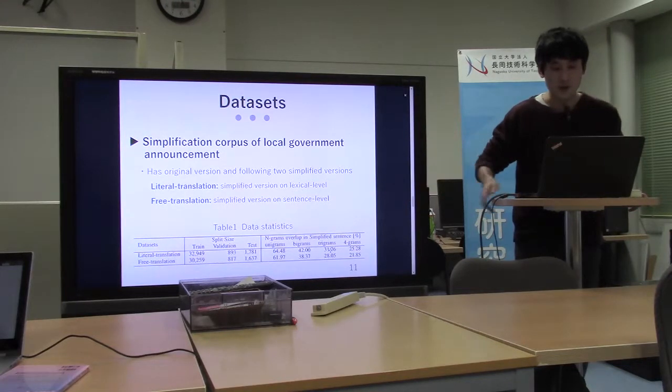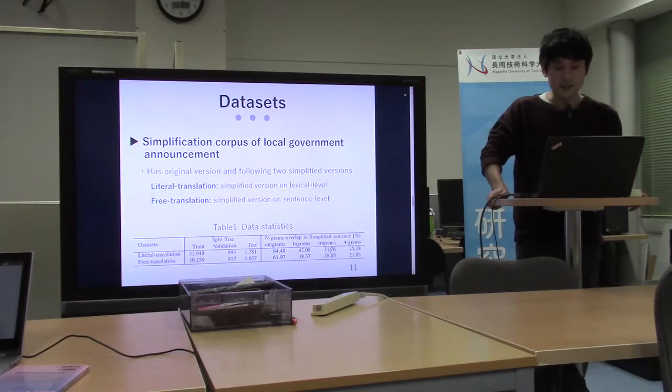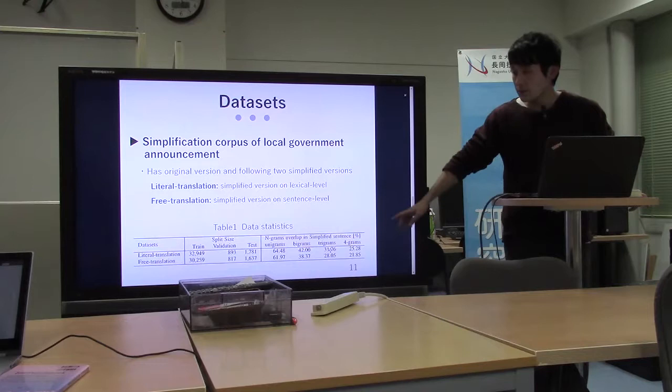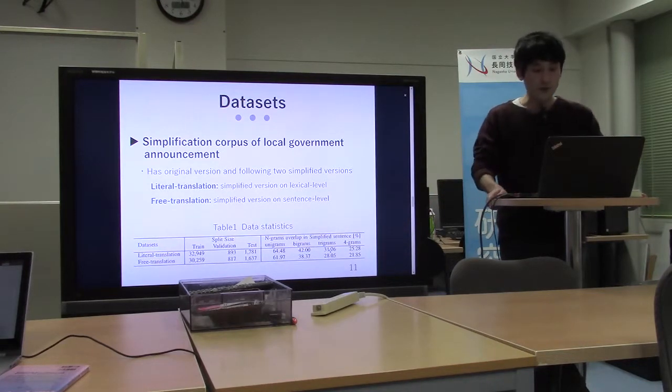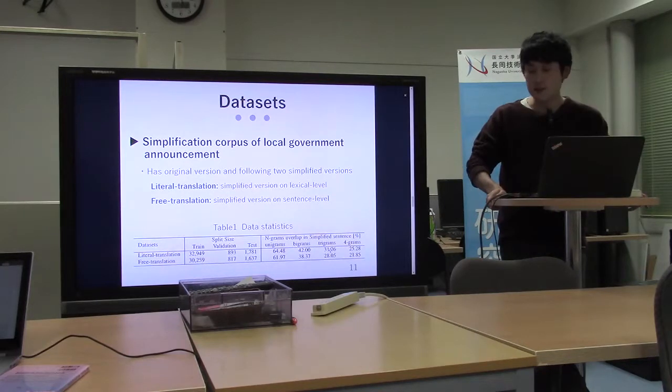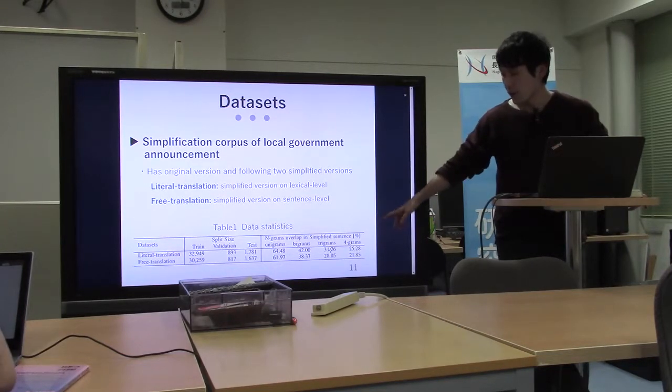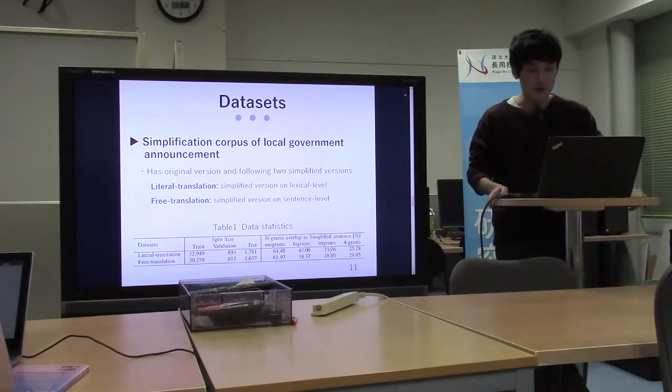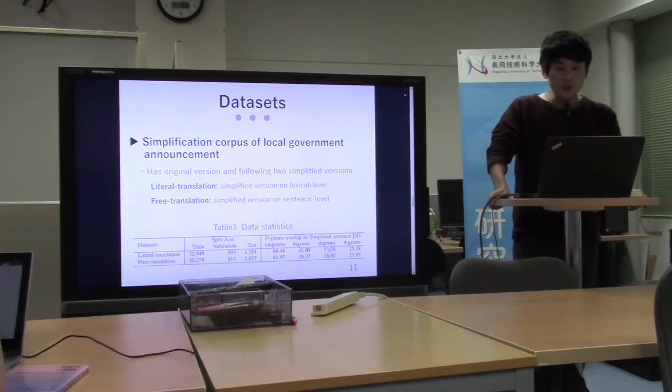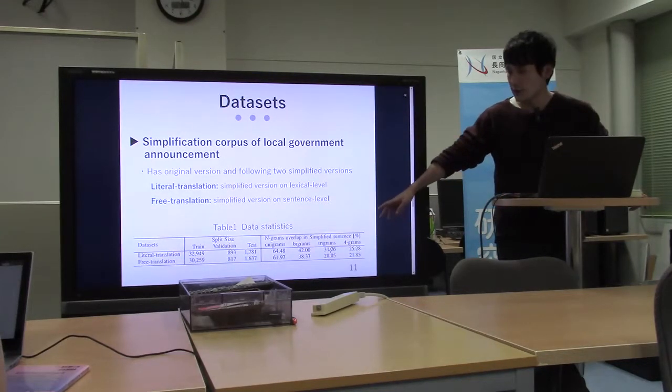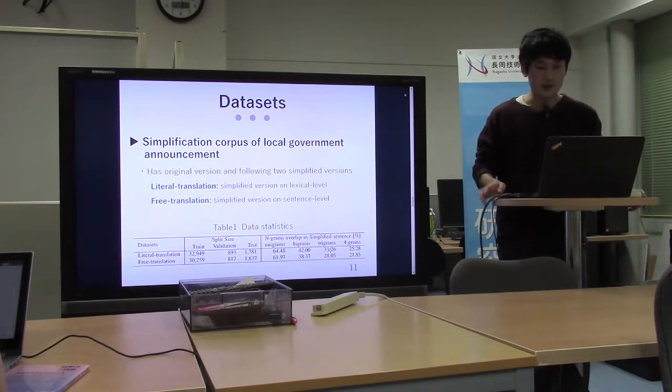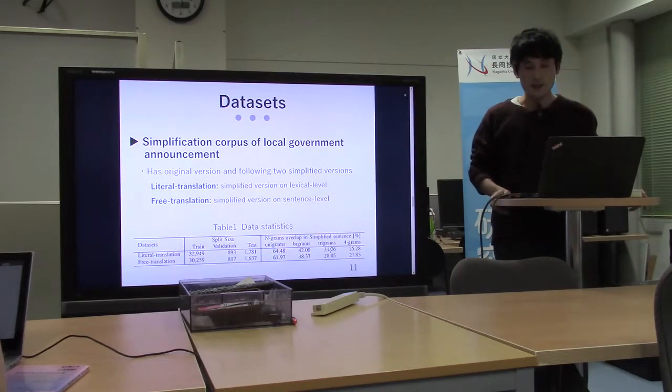Table 1 shows the data statistics. The two simplified versions have only about 30,000 training sentence pairs. Literal translation has more copying than free translation, which denotes the literal translation task is easier than the free translation task.